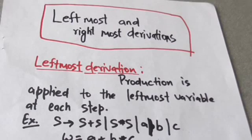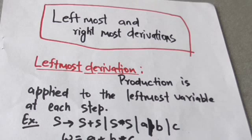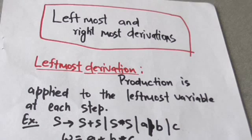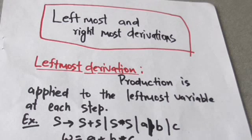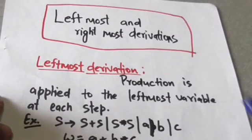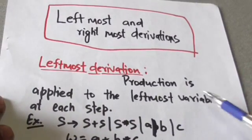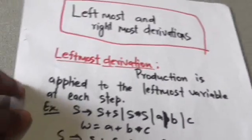Hello friends, welcome back. In this tutorial we will study about leftmost and rightmost derivations. If in a derivation of a string of terminals from a start symbol, productions are applied to the leftmost variable at each step, then this derivation is called leftmost derivation. In leftmost derivation, production is applied to the leftmost variable at each step.